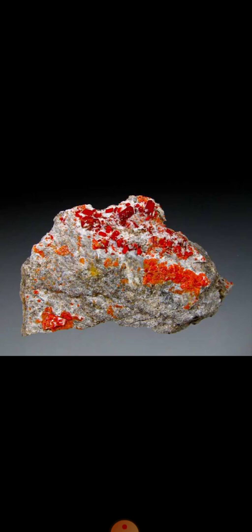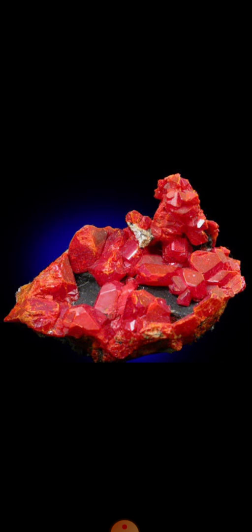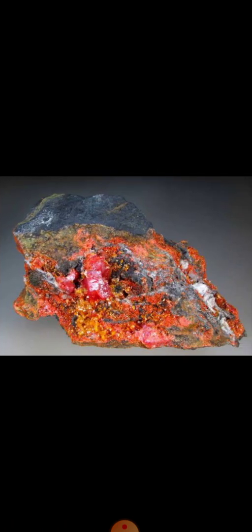Realgar and orpiment are mainly found associated with hydrothermal and volcanic activities. They are sublimation products at volcanic vents and crystallization products at hot springs. They can be found both at volcanic vents and at hot springs in many parts of the world, where they crystallize in the forms you can see here.